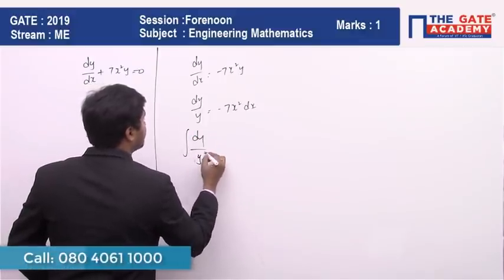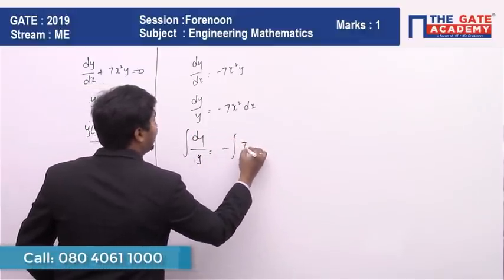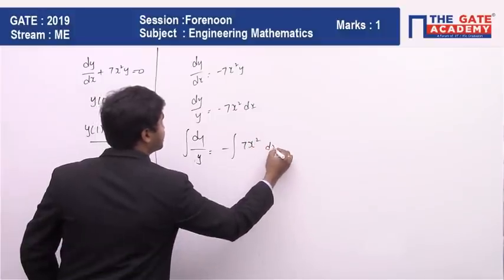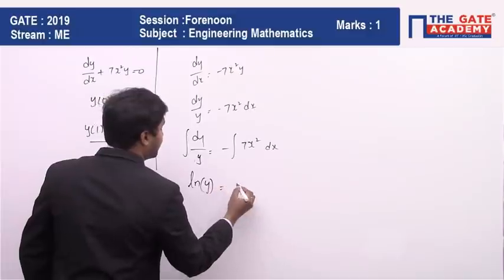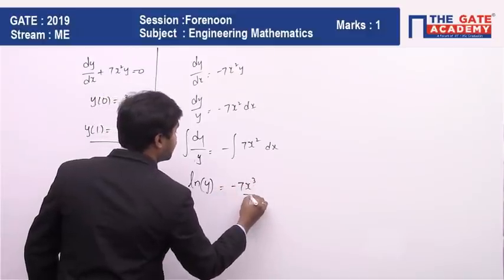Here we are going to have ln(y) and here it's going to be -7x³/3 + c.